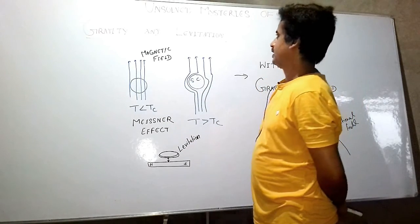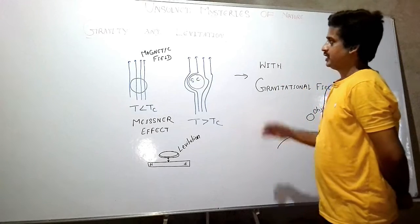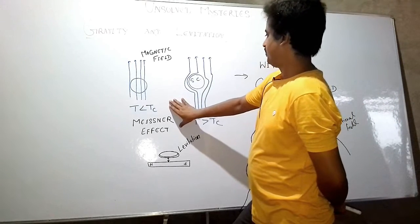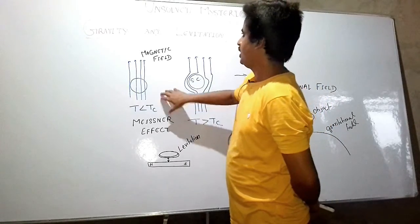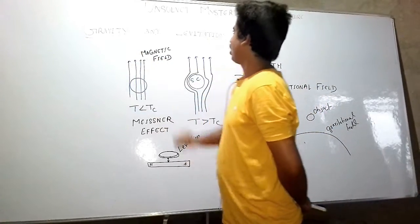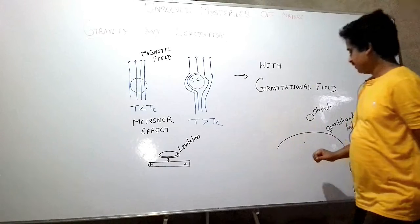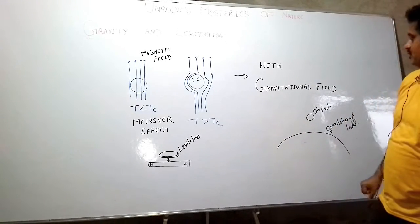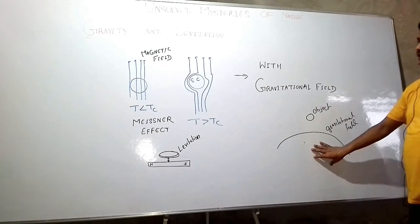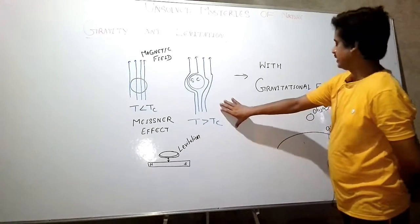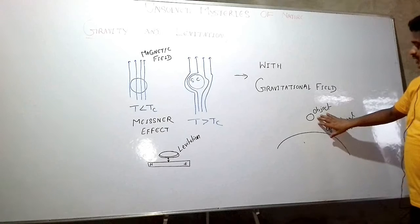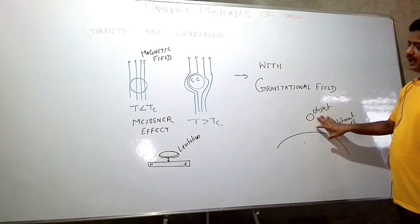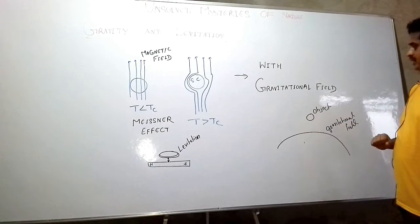The question is whether we can replicate this phenomenon with a gravitational field. If there is a gravitational field, can we generate a Meissner-like effect in any object so that it can float in the presence of a gravitational field?